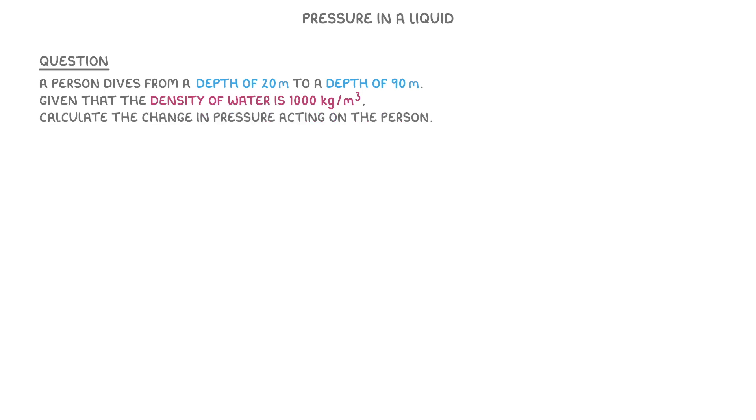To see how this works, let's try a question. A person dives from a depth of 20 meters to a depth of 90 meters. Given that the density of water is 1000 kilos per meter cubed, calculate the change in pressure acting on the person.